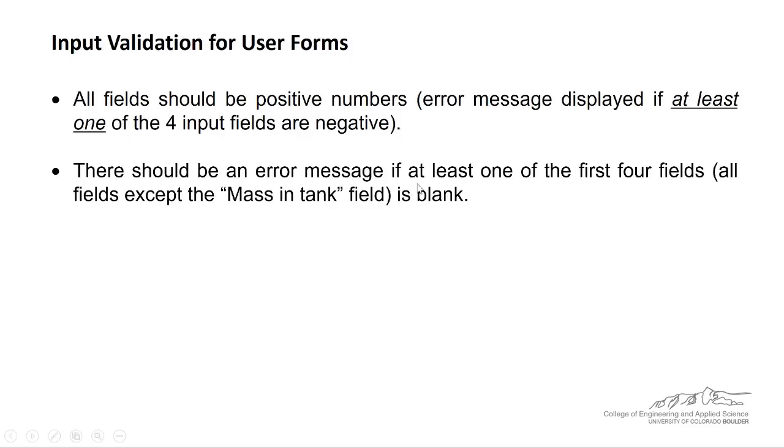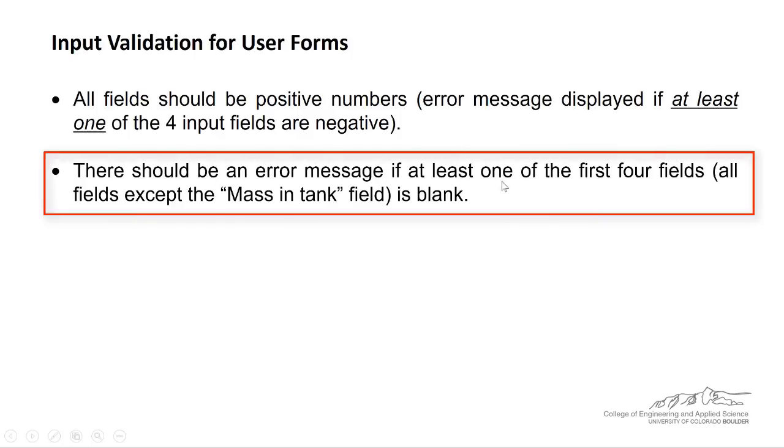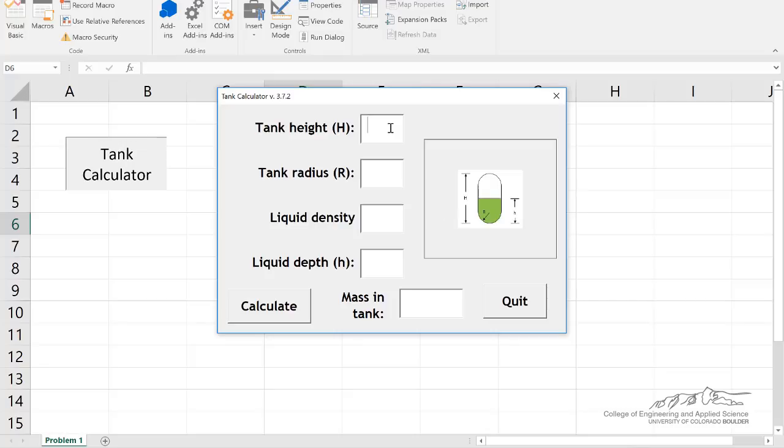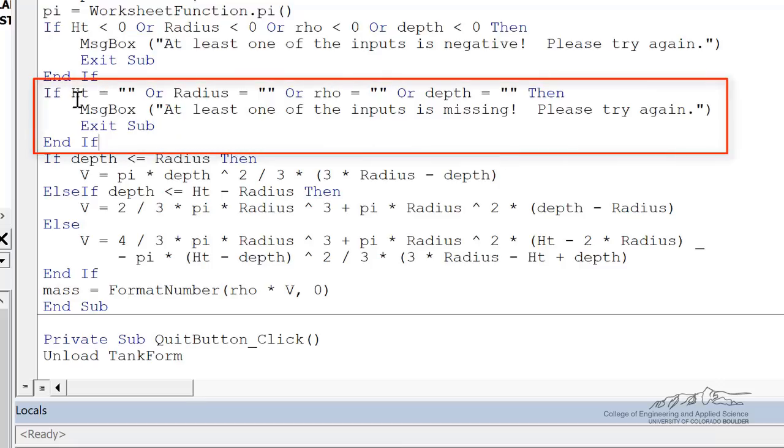The second thing we want to do, there should be an error message if at least one of the first four fields is left blank. It doesn't make any sense if we try to run this calculate button if we leave one or more of these fields blank. So what I've done here is I've just put if any of those variables is equal to just empty quotations. That means they left it blank. If any of those are true, then we're going to trigger a message box. At least one of the inputs is missing. Please try again. And then we exit the sub.